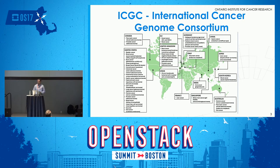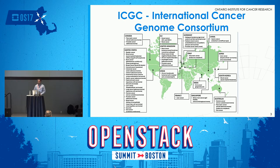ICGC is a voluntary scientific organisation created with the goal of collecting and analysing 500 tumor-normal pairs for the 50 most common types of cancer. It's the largest global project of its kind with members from all over the world. For every type of cancer covered by ICGC, it receives DNA samples from patients of two or more countries, and the data collected is analysed using the same algorithms for consistency.